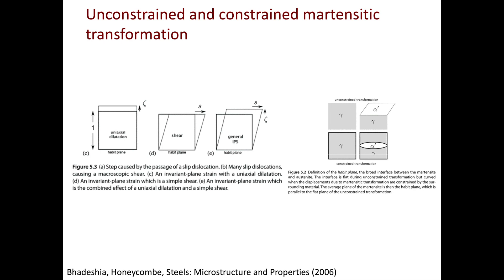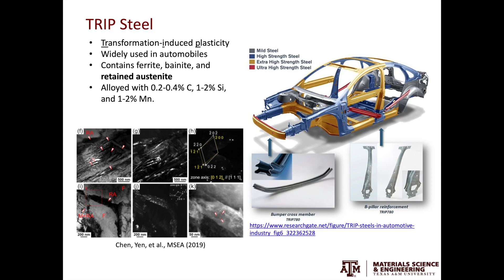Let's move on to TRIP steel. TRIP stands for transformation-induced plasticity. TRIP steels are widely used in automobiles — a lot of the extra high strength and ultra high strength steels are made from TRIP steels. They have exceptionally good mechanical properties: super high strength and very good ductility. If we look at the microstructure, it usually contains ferrite, bainite, and retained austenite. Retained austenite is the key ingredient that enables the TRIP effect. The TEM micrographs shown are from Professor Hongwei Yan's group at Taiwan National University — the dark grains in bright-field TEM images are the retained austenite. TRIP steels are usually alloyed with austenite stabilizers such as carbon, silicon, and manganese.